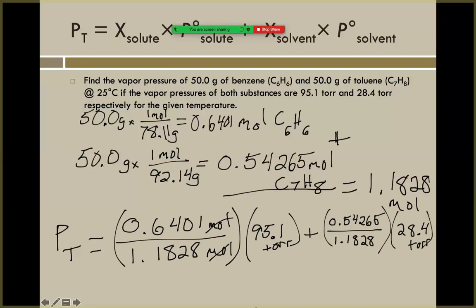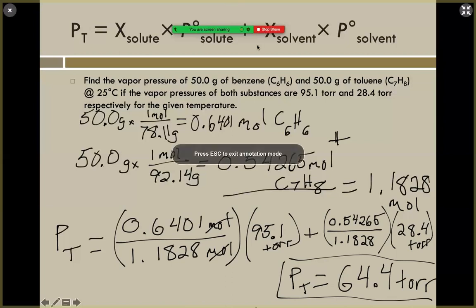When we work our math, we find the final pressure when these two volatile substances get mixed together is 64.4 torr. Just another way we can start to calculate the vapor pressure above the solution, depending upon what we have dissolved into that solution. Thank you.